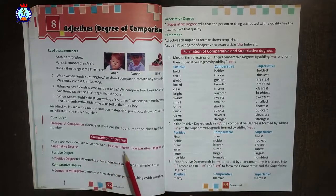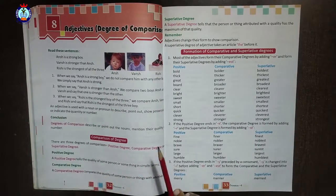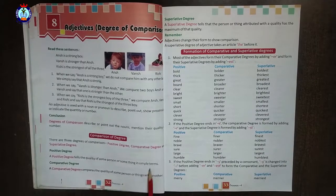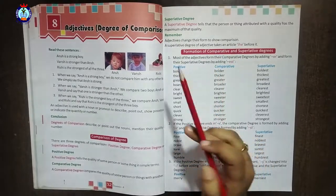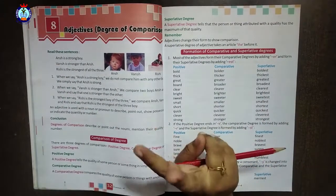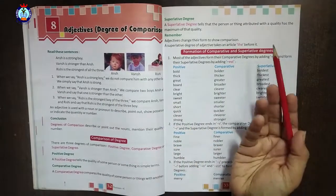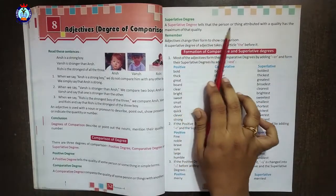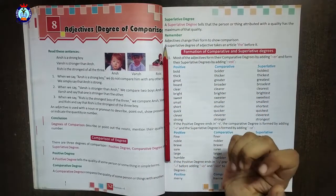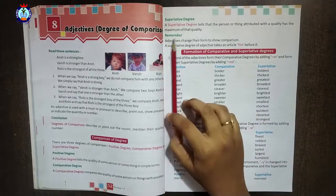The three degrees of comparison are: positive, comparative, and superlative. Positive degree simply states a person's quality. Comparative degree compares one person to another. Superlative degree says that among two or more, one has the most — that is what the superlative expresses.